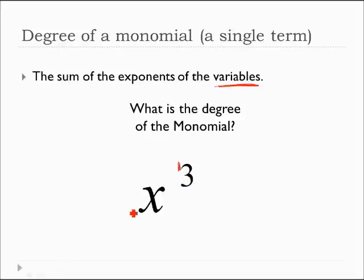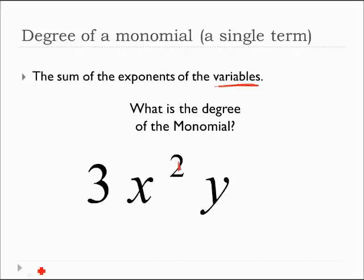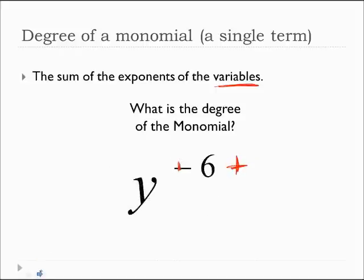This one is 3rd degree. It's a 3rd degree, because it's x to the 3rd power. This one? The sum of the exponents of the variables. So there's a 2 here. That's y to the 1st power. So that would be 2 plus 1. 2 plus 1 is 3. This also is a 3rd degree polynomial.